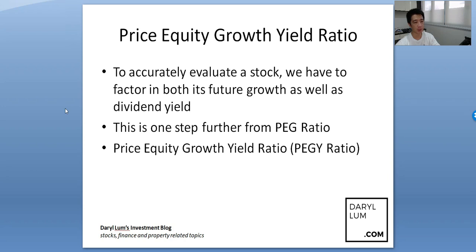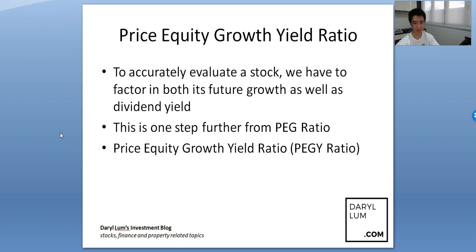To accurately evaluate a stock, the thinking is that we have to factor in both its future growth as well as dividend yield. The last lesson we had price earnings growth ratio — that one was just to evaluate future growth. So this one we actually included the dividend yield as well, making it one step further from price earnings growth ratio.